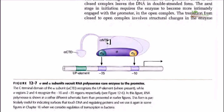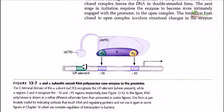Among the alpha subunit, it carries two different regions: one is the C-terminal domain of alpha, called alpha CTD, and another is called the N-terminal domain of alpha, or alpha NTD. These two domains are connected together by a very thin structure of amino acid sequences.